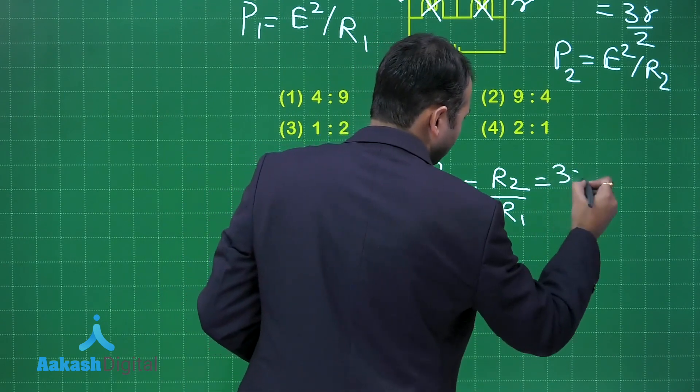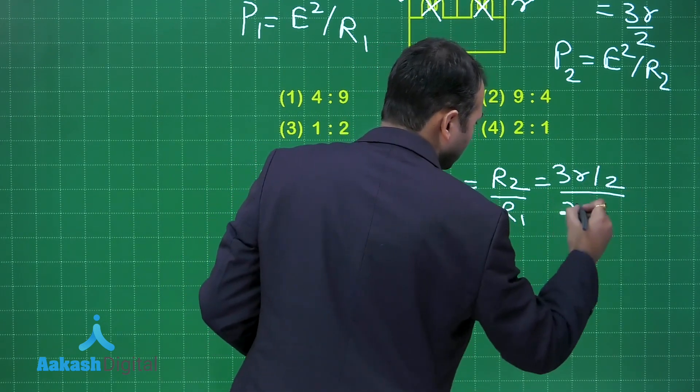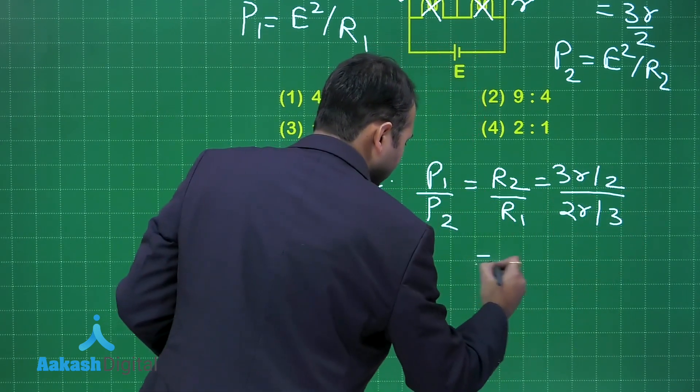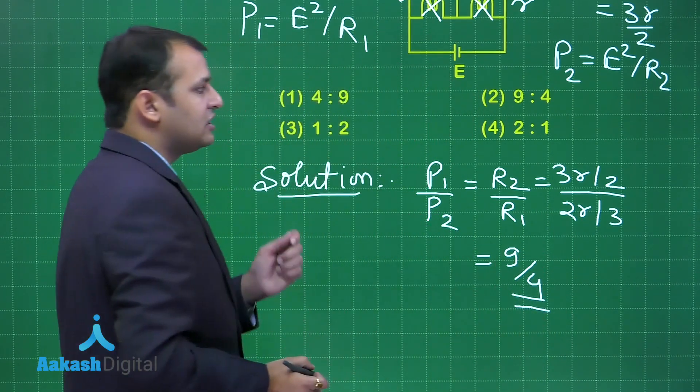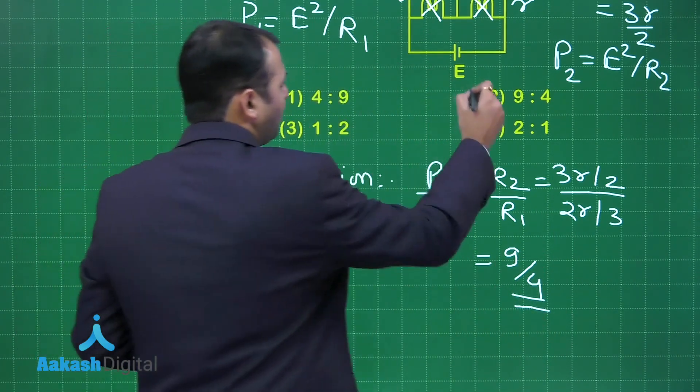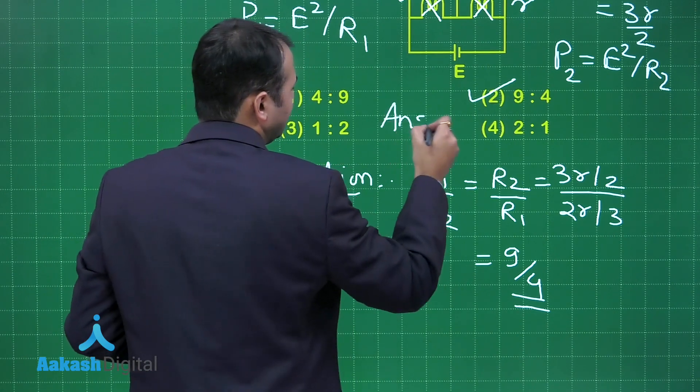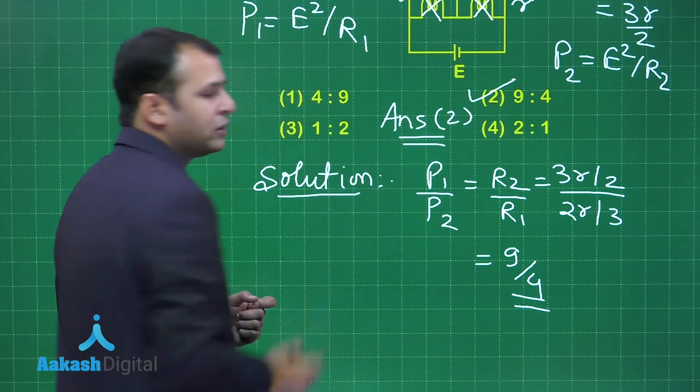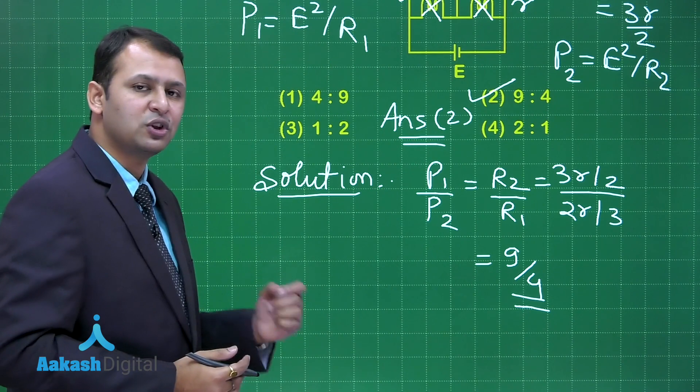This is equals to 3R by 2 and this is equals to 2R by 3. Solving this, you will get 9 by 4. Let's see which is the best suited option. Among the four options, option number 2 is the right answer to this question. Now let's move on to our next question, that is question number 18.